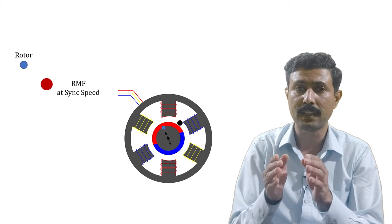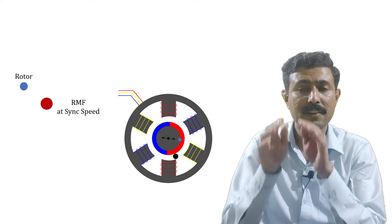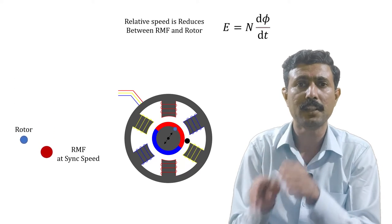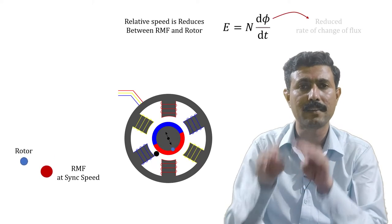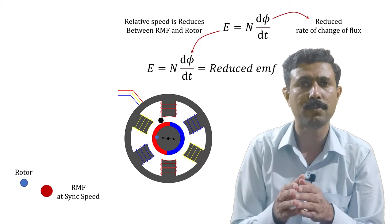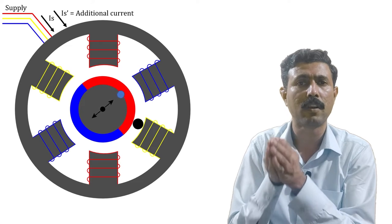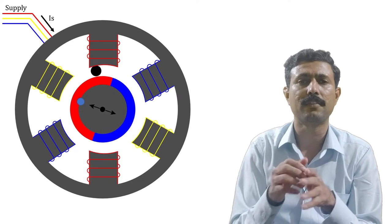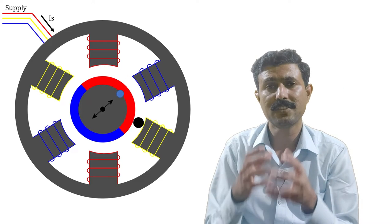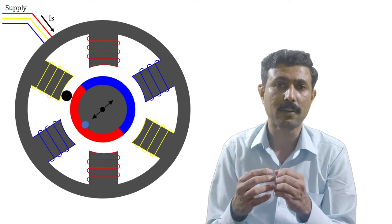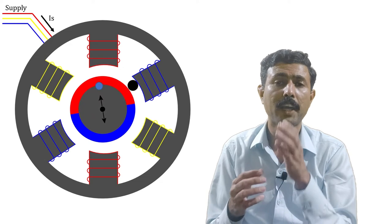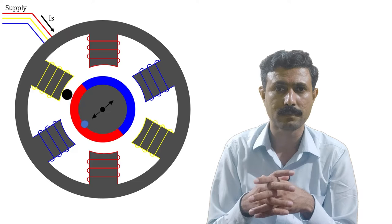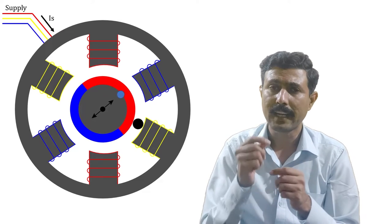Once the rotor starts gaining speed, the relative motion between the rotating magnetic field and the rotor gradually reduces. Because of this reduced relative speed, the induced EMF in the rotor reduces and the current also reduces. This reduces the burden on the stator, and the stator draws less current from the system. This is the reason why the starting current of an induction motor is five to eight times higher than the rated current.